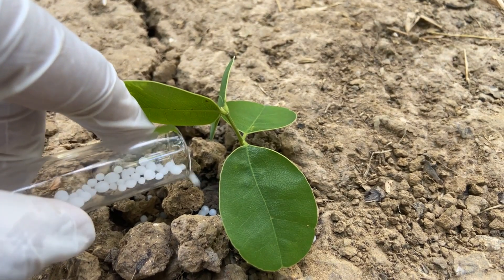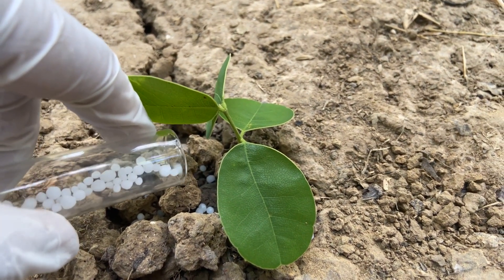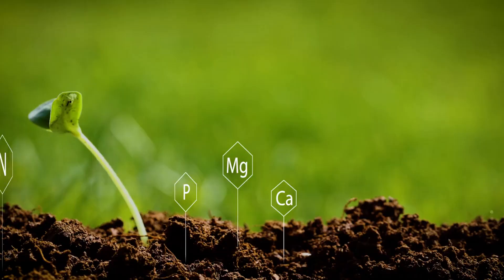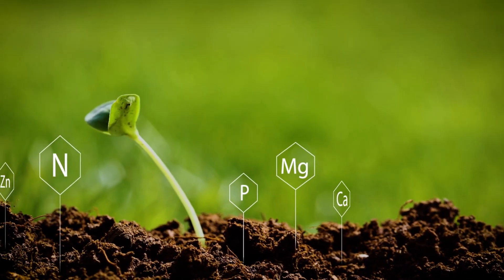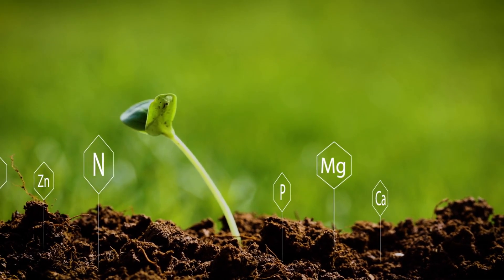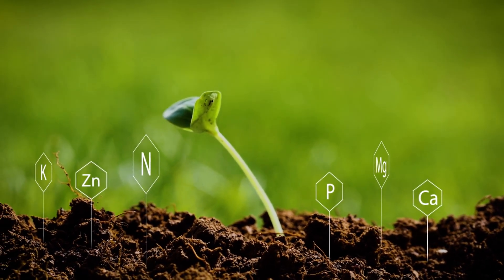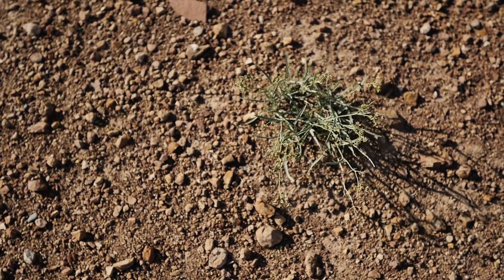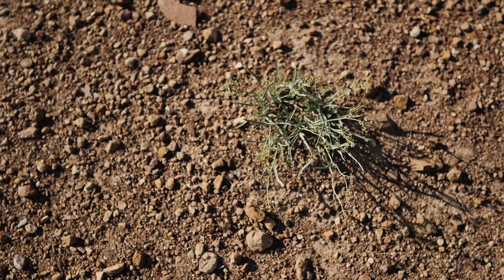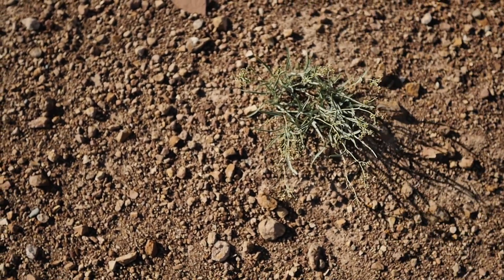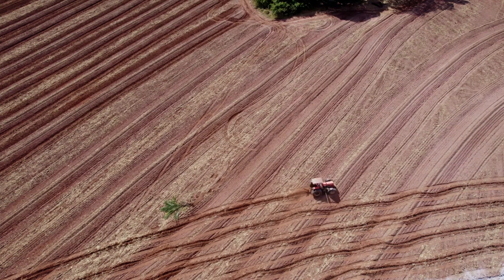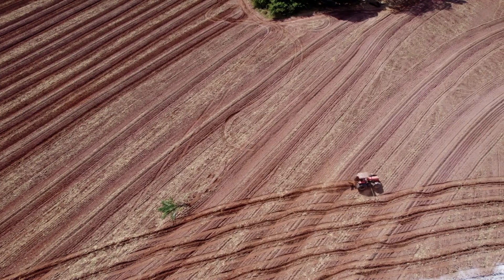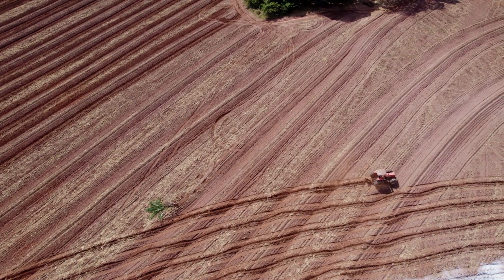Conversely, in alkaline soils with a pH above 7.5, nutrients like iron, manganese, and phosphorus become less available. Plants growing in these conditions may exhibit chlorosis, yellowing of leaves, poor growth, and reduced flowering or fruiting. For instance, iron deficiency is common in alkaline soils and manifests as yellow leaves with green veins, a condition known as interveinal chlorosis. Crops like azaleas, rhododendrons, and blueberries, which prefer acidic soils, will struggle in alkaline conditions, showing poor growth and nutrient deficiencies.